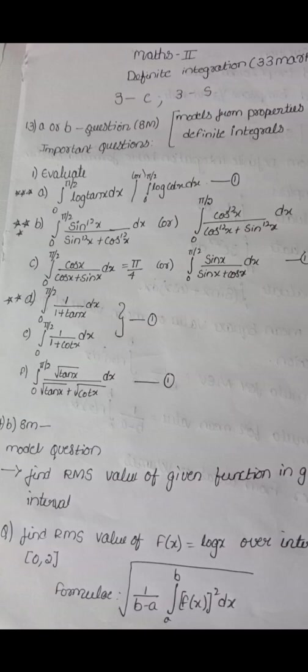Third question: without powers, the model is 0 to pi by 2 of cosx by (cosx plus sinx) dx. Or you choose 0 to pi by 2 of sinx by (sinx plus cosx) dx. If you have powers, you write the same model. These follow the same approach.